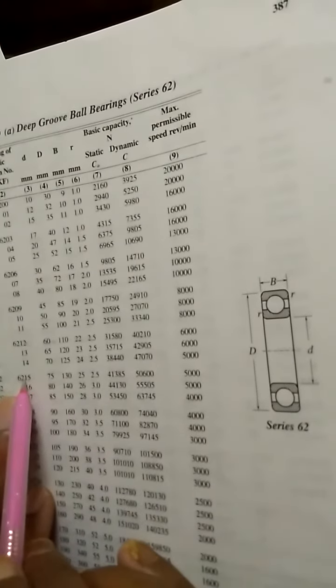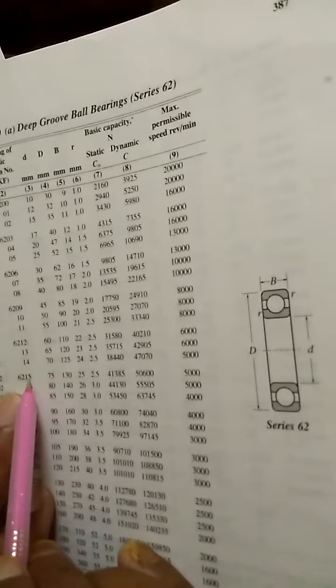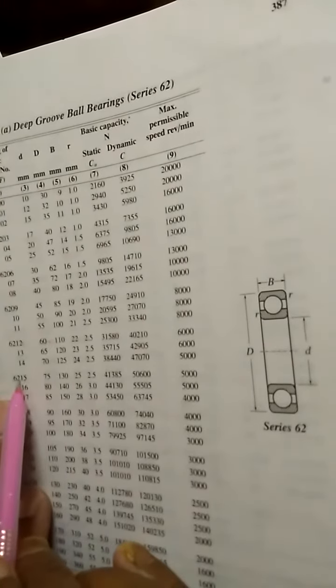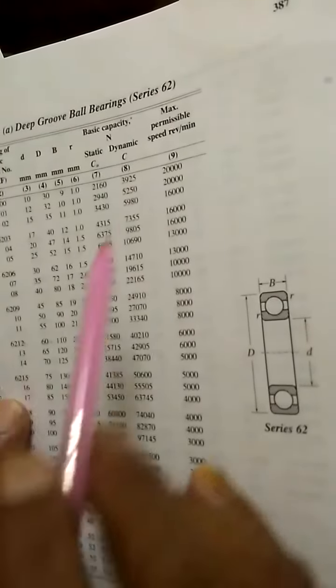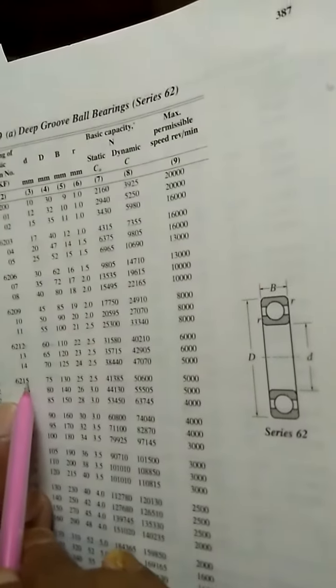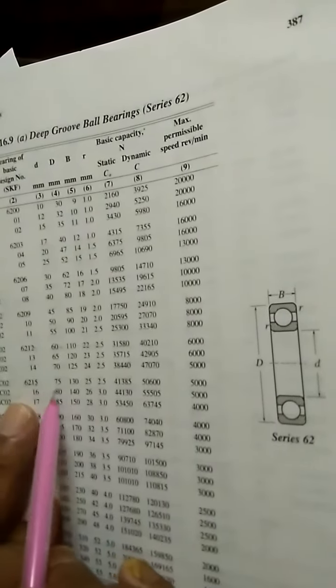So 75 means you are going to have 6215 bearing number. 62 meaning is 62 series, that is what I have here. 15 is a bearing number.